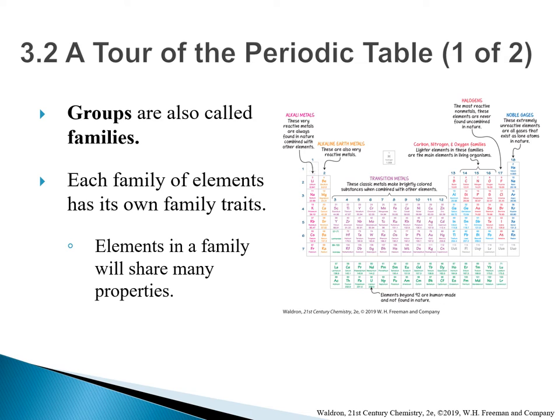Out of the 18 groups, there are a few groups worth mentioning — they all have special names. Elements in group 1 are called alkaline metals. These very reactive metals are always found in nature combined with other elements. Elements in group 2 are called alkaline earth metals. They are very reactive metals as well.